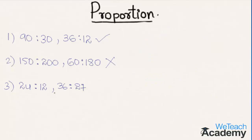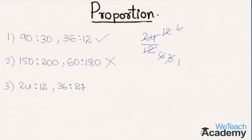Coming to the third example, the ratio 24 is to 12 can be written as 24 divided by 12. Simplifying: 2 times 12 is 24 and 2 times 6 is 12. Further simplifying, 3 times 1 is 3 and 3 times 2 is 6. So we get the answer here 2.